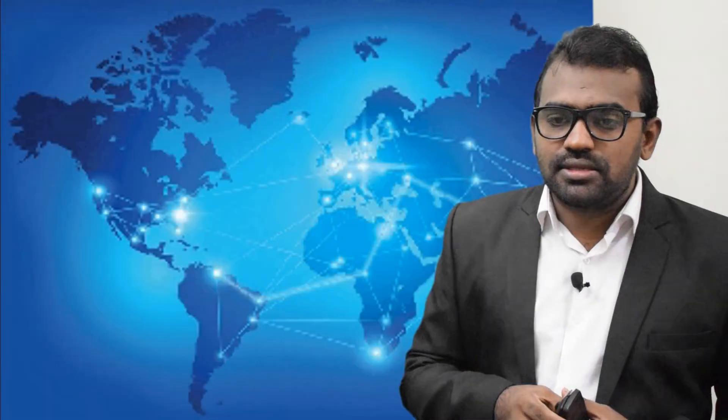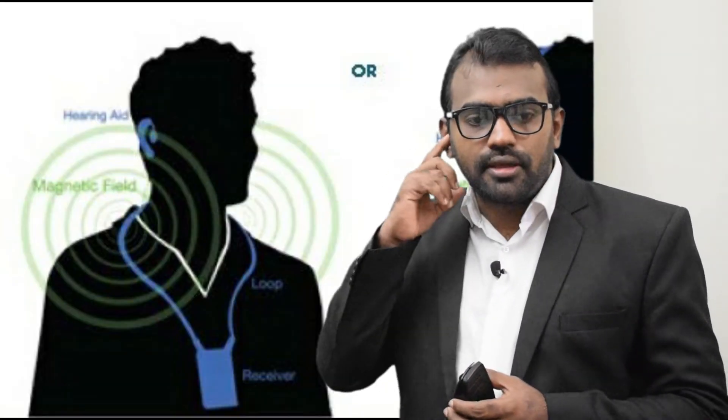FM systems are ALDs that use radio broadcasting technology. They are often used in educational settings and offer mobility and flexibility when used with portable body-worn transmitters. Some newer FM systems utilize miniaturized receivers that fit onto the hearing aid.